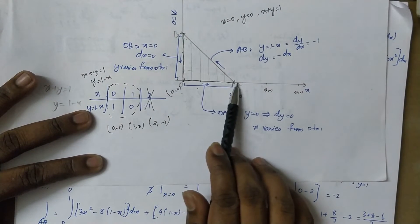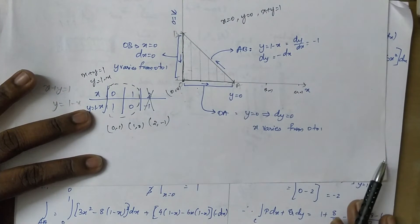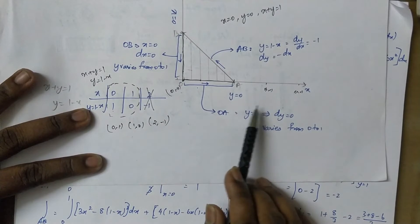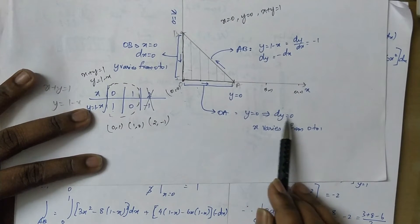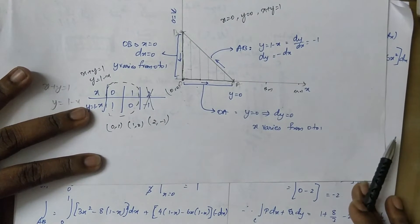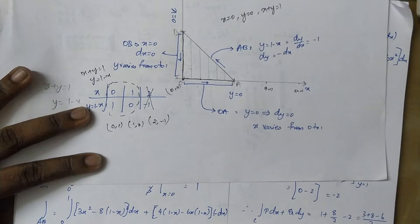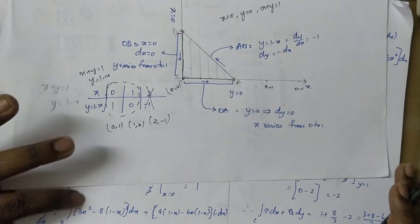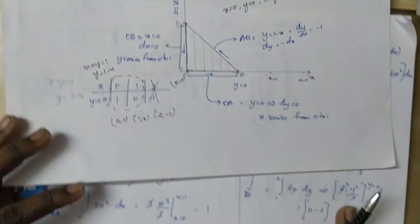Integral O to A — here y equal to 0. So y equal to 0. Differentiate — the constant differentiates to 0. Okay.